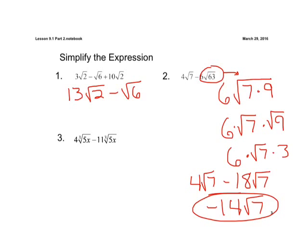All right, number 3. We have the same index. Our index is 3. We have our same radicand. Our radicand is 5x. So let's just subtract like terms. 4 minus 11, we get a negative 7, and we have our cube root of 5x. The main core concept there is we can just add and subtract our like terms when we have the same index and the same radicand.